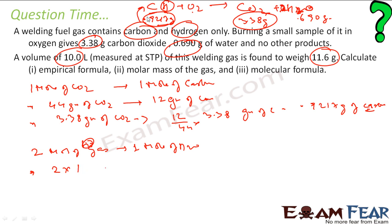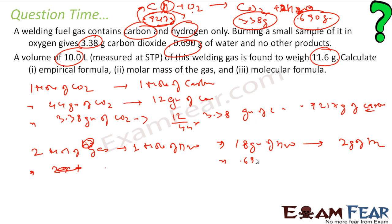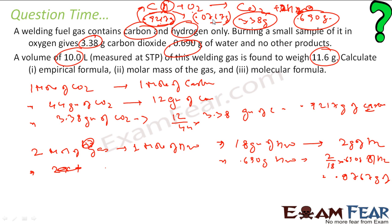We need to find the hydrogen grams now since we have already found carbon. To get 18 grams of water you need 2 grams of H2 gas. But we got 0.690 grams of water, so you need (2/18) × 0.690 grams of H2 — that is 0.0767 grams of H2. So I have 0.0767 grams of hydrogen.